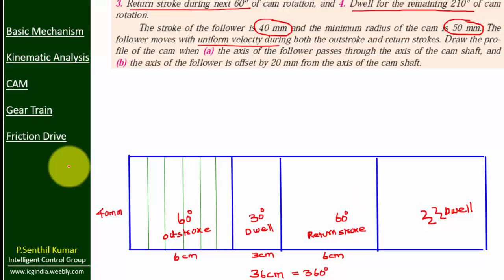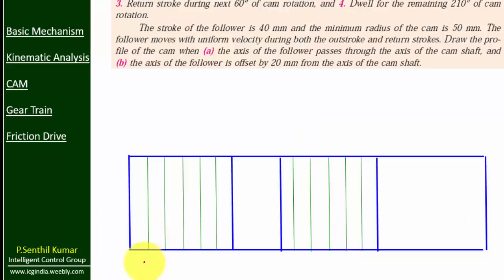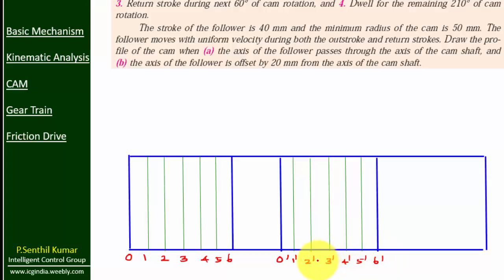Divide the out stroke into 6 equal parts, each division 1 centimeter. Divide the return stroke into 6 equal parts. Mark 0, 1, 2, 3 up to 6 and 0', 1', 2' up to 6'. Connect out stroke, dwell, and return stroke like this.